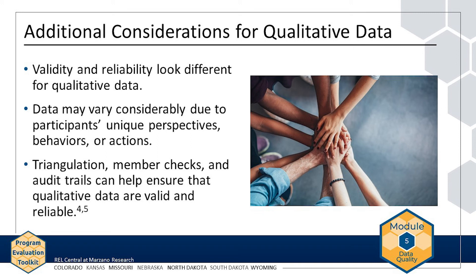Another way to support the validity and reliability of your qualitative data is to develop an audit trail. An audit trail is a documented history of your qualitative data collection and analysis. By carefully documenting your data collection procedures, training of data collectors, and notes, you will be able to cross-reference your findings with the conditions under which the data were collected. For instance, if multiple participants suggest you might have missed a key perspective during a member check, you may want to review the codes you created to ensure that you did not miss a key code. If you were not keeping an audit trail, this would not be an easy task.